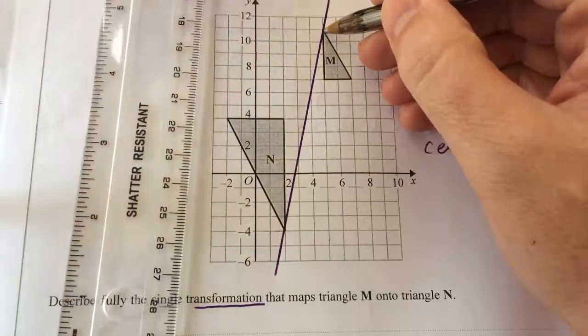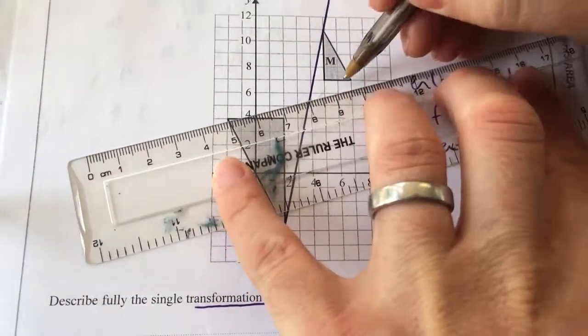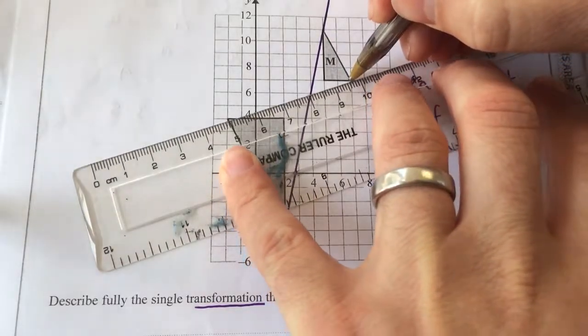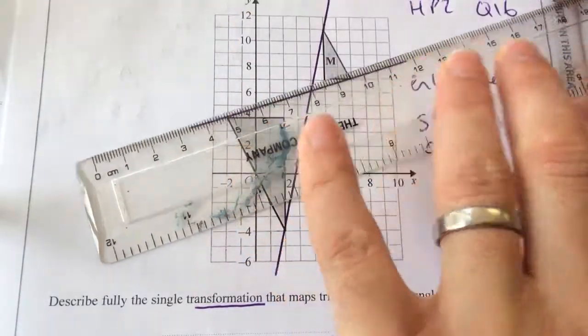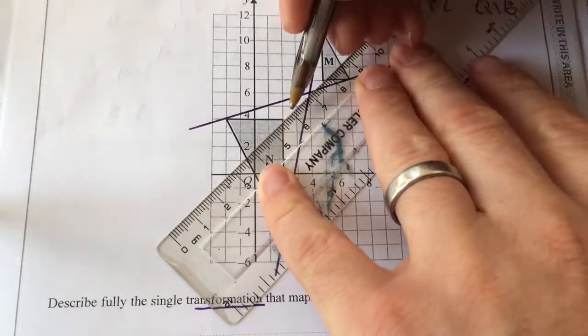I'll draw the equivalent points and join them. And where they all cross should be the center of enlargement. And that one there would also go through that same point.